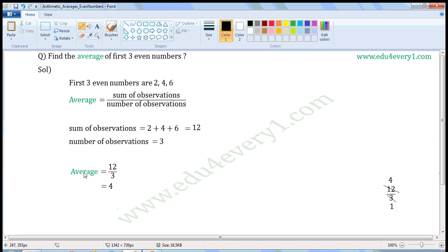Now, average is equal to 12 by 3. Sum of observations is 12, number of observations is 3.